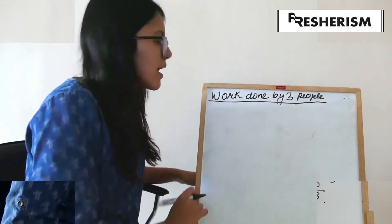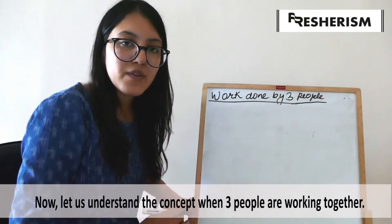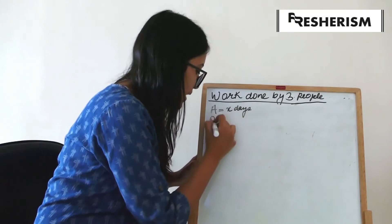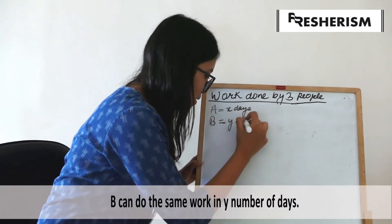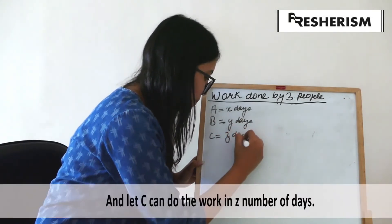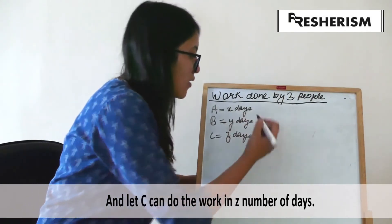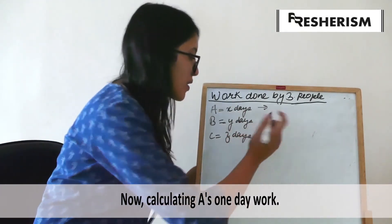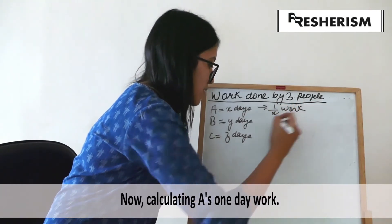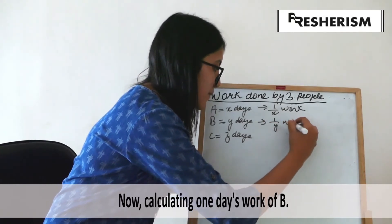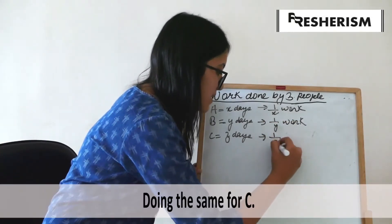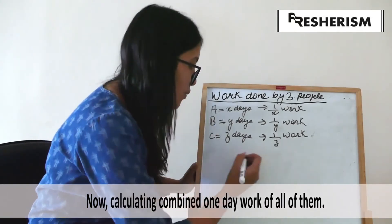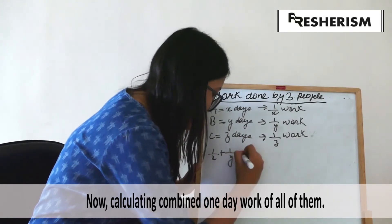Let us now understand the concept of work done by 3 people. Let us consider that A does the work in X number of days, B in Y number of days, and C does it in Z number of days. It is very similar to that of 2 people. The amount of work done by A in 1 day will be 1 by X, by B will be 1 by Y, and by C will be 1 by Z. Hence, the work done by all 3 of them combined in 1 day will be 1 by X plus 1 by Y plus 1 by Z.